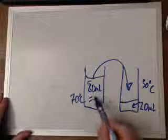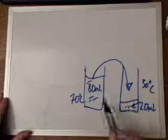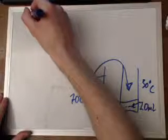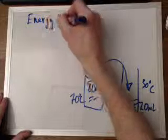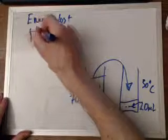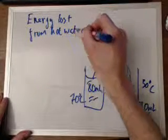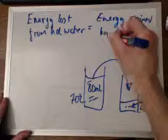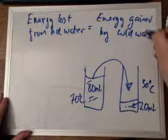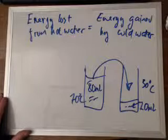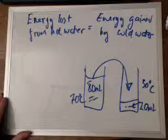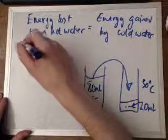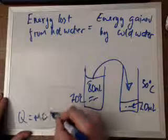The energy lost by the hot water is equal to the energy gained by the cold water. Heat flows naturally from hot to cold. By the conservation of energy, energy lost from hot water equals energy gained by cold water. That is the theory. Now we'll start putting in the equation, the specific heat capacity equation: Q = mcΔT.